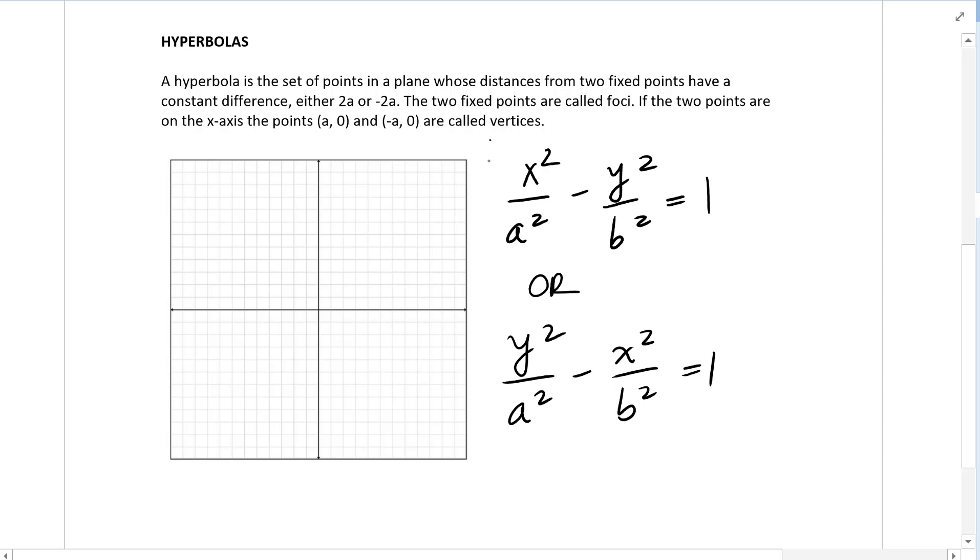The equation of the hyperbola is x²/a² minus y²/b² equals 1, where a² + b² = c². Or we can have y²/a² minus x²/b² equals 1, again with the condition that a² + b² = c².